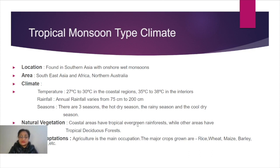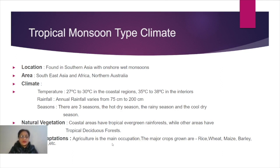The main trees found here are teak, sal, and sesham. These are the main trees found all over India in large numbers and throughout the entire region under this climate.